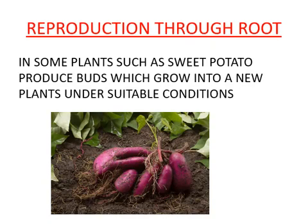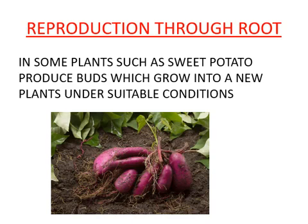Reproduction through roots: in some plants, such as sweet potato, buds are produced which grow into a new plant under suitable conditions. When you observe a sweet potato, you can observe small buds on it. These buds reproduce into their own kind — a new plant — under suitable conditions.